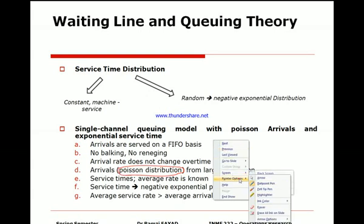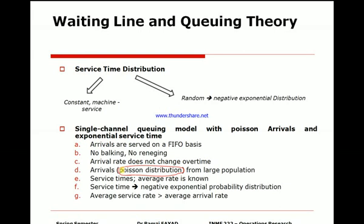Arrivals follow a Poisson distribution — for example, if someone asks how often there is an accident on a stretch of road, the average might be once per month but it could be more or less. Arrivals always follow a Poisson distribution, the average service rate is known, and service time follows a negative exponential distribution. Importantly, the average service rate must be greater than the arrival rate — for example, if the service rate is 10 per hour and arrival is 15 per hour, you end up with an ever-growing queue.